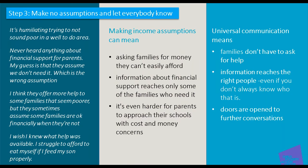Step three: making no assumptions and telling everyone. It can be really easy to make assumptions about income in an affluent area or when nobody has complained about costs. But parents strongly said that wrong assumptions meant asking families for money they couldn't afford, pressure on them, information about financial support not reaching all the families who need it, and making it very hard for parents to approach schools for support if they need it.